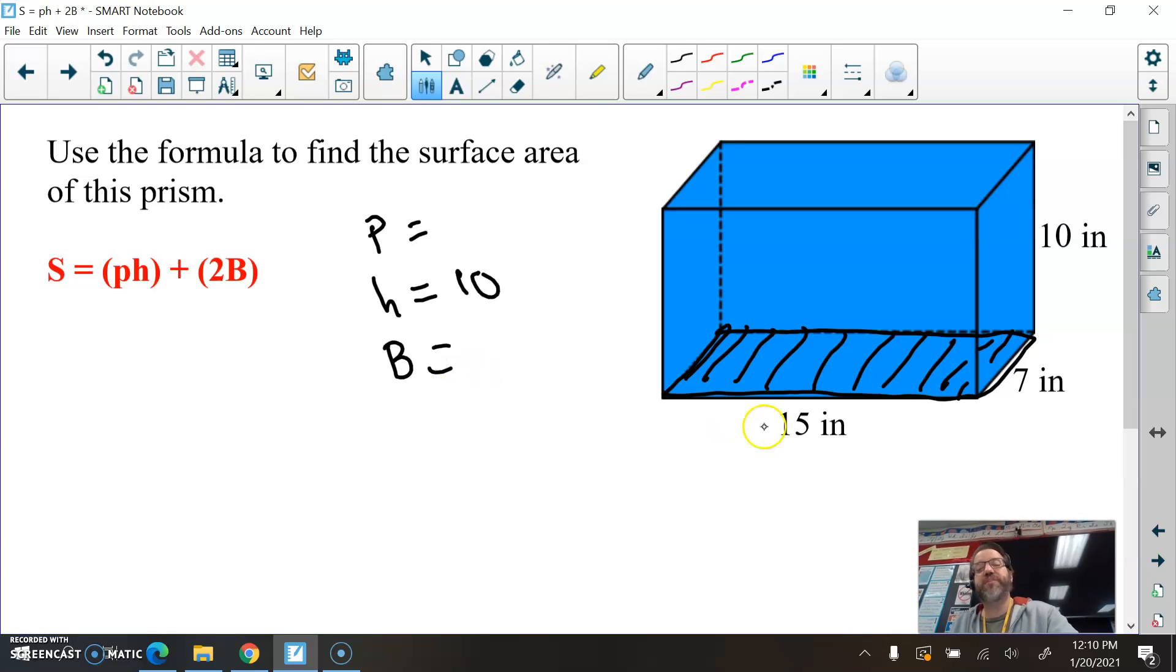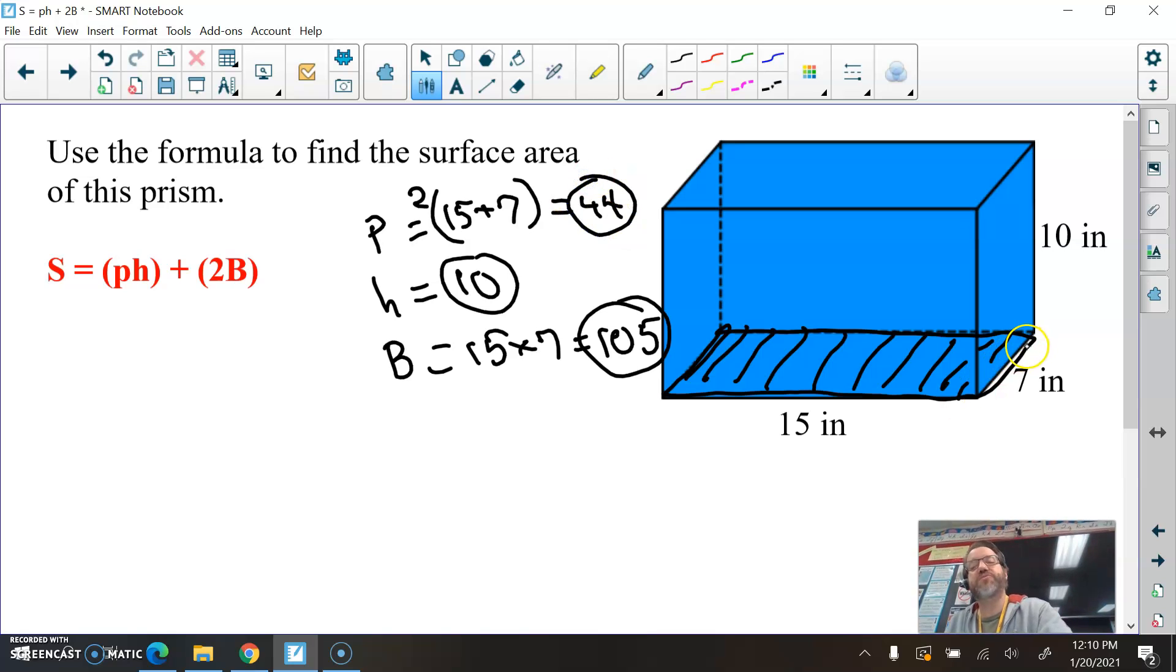Once we find these, we can substitute those values in to this formula. Let's start with the easy one. What is the height of this prism? Well, the base is on the bottom here. So the height is this 10-inch measurement here. Now, the big B, the area of the base, would be 15 times 7, because it is a rectangle, so you just take length times width. And 15 times 7 is 105. All that's left is to find P, the perimeter of the base, and that's the distance around the base. We have 15 plus 7, but that only gets us halfway around. You then need to double that, because you have another 15 and another 7 here. So once you have 15 plus 7, you're going to double that. So that's 22 times 2, which is 44. You can just add 15 plus 7 is 22, plus 15 is 37, plus 7 is 44.